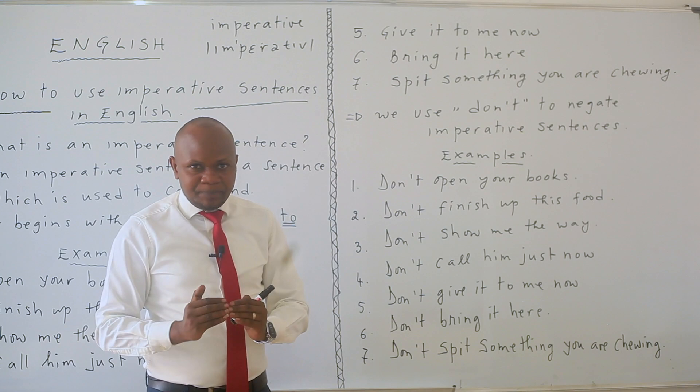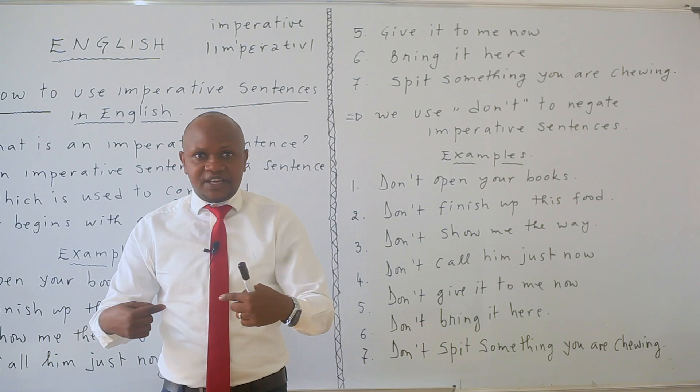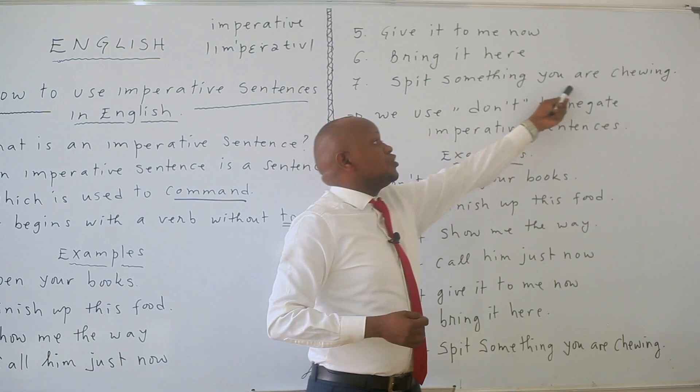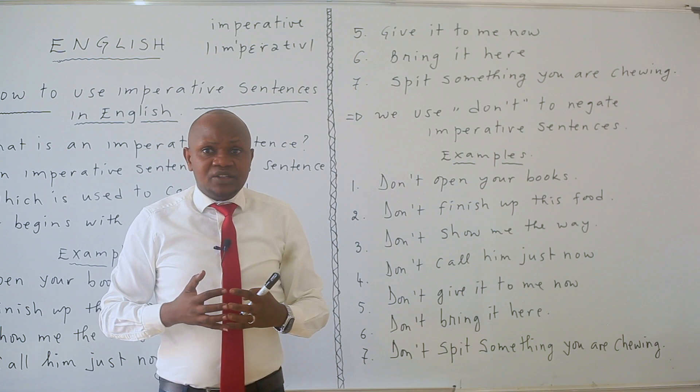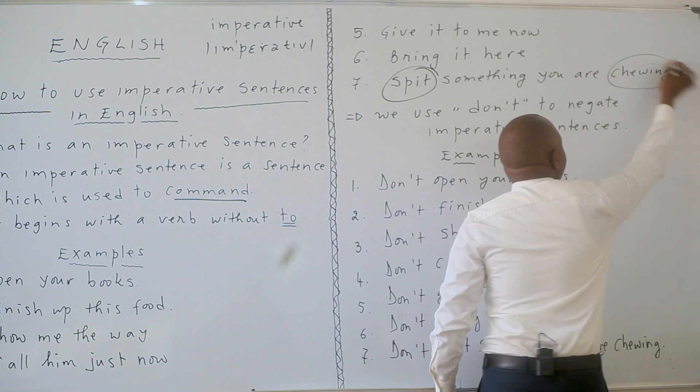Bring it here. For example, number six: bring it here. If you don't bring it here, there are consequences. Spit something you are chewing — that is another imperative sentence. To spit means to expel from the mouth; verb 'to chew' means to chew. Spit something you are chewing.